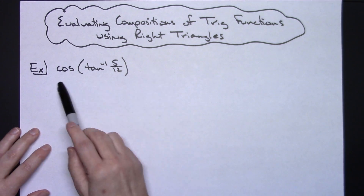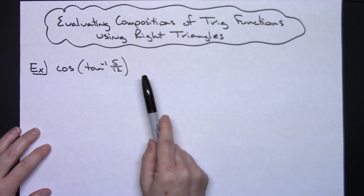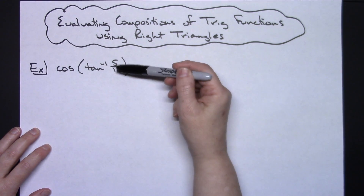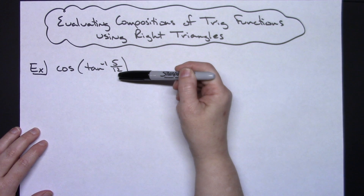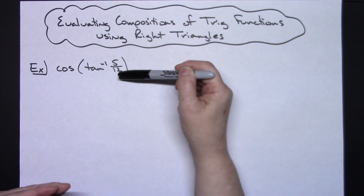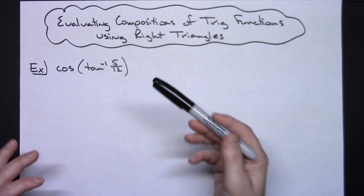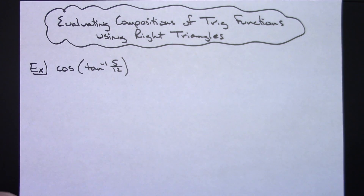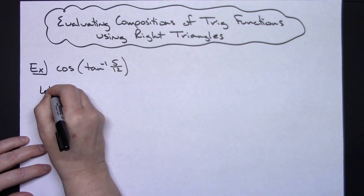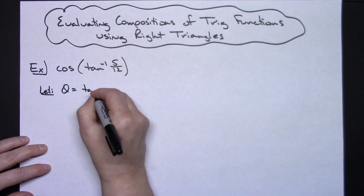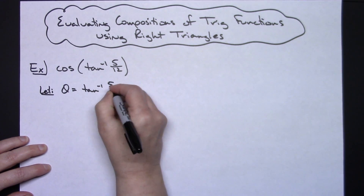So let's say we're trying to evaluate this expression right here. We're going to work on the inside part of the function first. We're going to recognize that this is 5/12ths. This is going to work nicely for us to use that bow tie triangle and figure out which quadrant it should be in so that we can set up a right triangle and then evaluate this outside function. So to start with we're going to let theta equal the inverse tangent of 5/12ths.